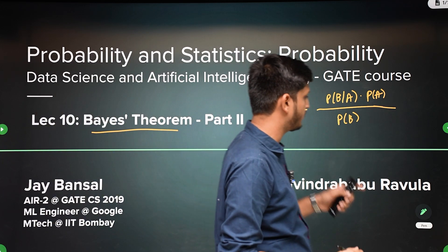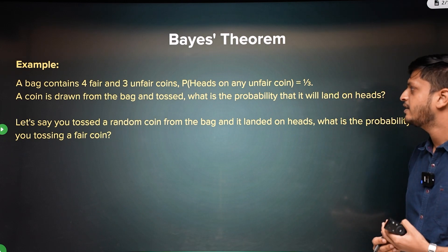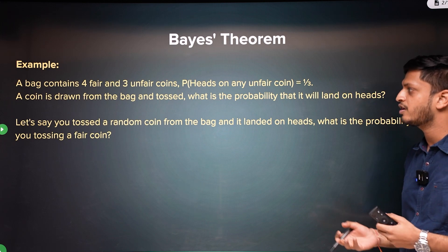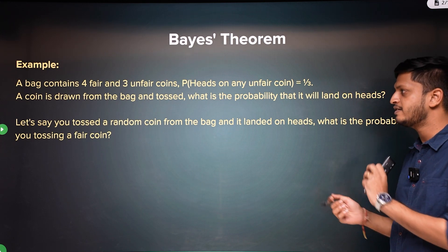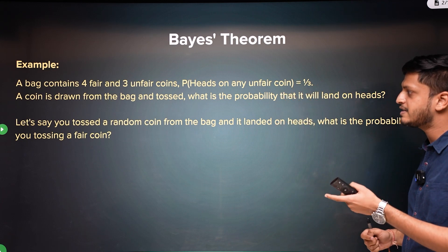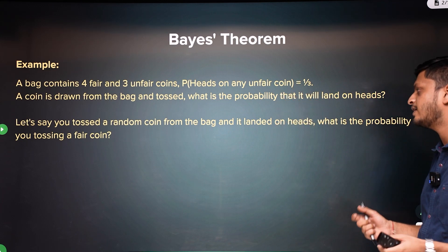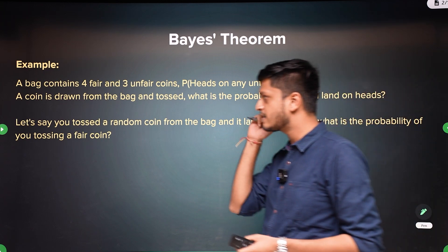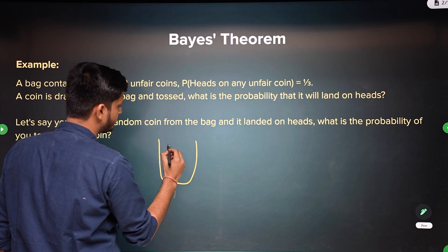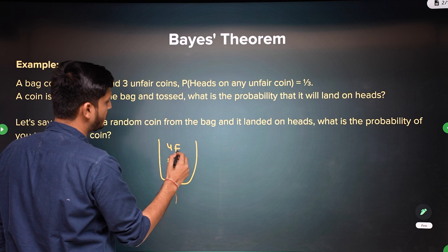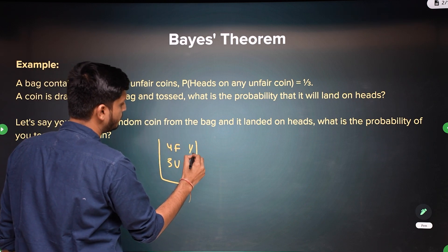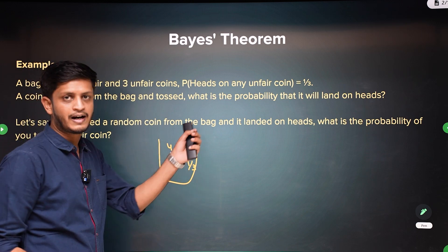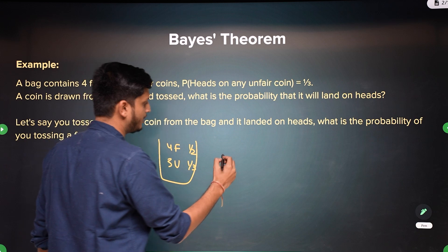So a bag contains 4 fair and 3 unfair coins, and the probability of heads for any unfair coin is 1 by 3. A coin is drawn from the bag and tossed. What is the probability that it will land on heads? This is the first part, from total probability. Now let's say you tossed a random coin from the bag and it landed on heads — what is the probability that the coin you tossed was fair?